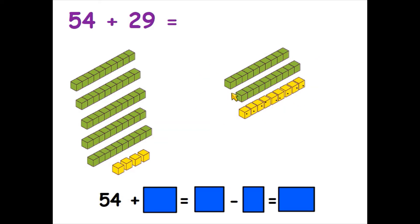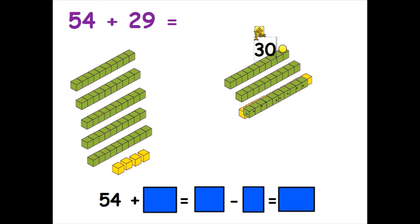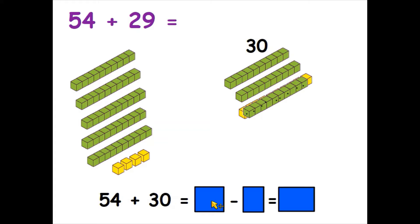Instead of adding 29 in my head — because I don't really want to add on nine ones, which can get a bit tricky to do quickly — I could round it up to the nearest 10 and actually add 30. So I give the number one more: 29 becomes 30, which is the same as having a whole other 10. So I've now got 30, and I'm adding 30 instead. So what's 54 add 30? It's 84.